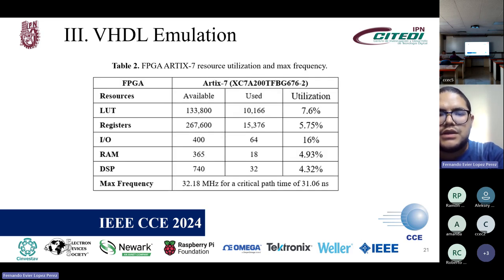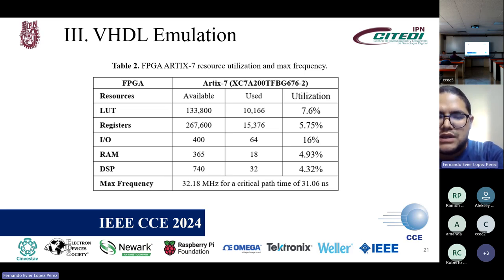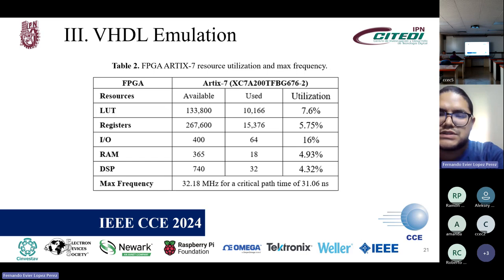Finally, we have the resource utilization and max frequency for this project. We used 7.6% of lookup table queues, 5.75% of registers, 16% of inputs and outputs, as well as 4.93% of RAM and 4.32% of DSP blocks. The max frequency for this system was 32.18 MHz, obtained from a critical path time of 31.06 nanoseconds.